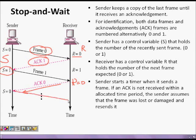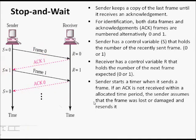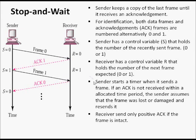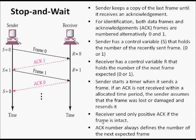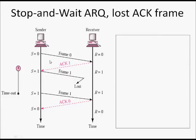When the sender sends a frame, it also starts a timer. This is important because if a frame is lost or damaged, no acknowledgement will come. In both cases the sender must retransmit. That is why we have a timeout mechanism. The receiver only sends positive ACKs and never a negative ACK. The ACK number always defines the next expected frame number.